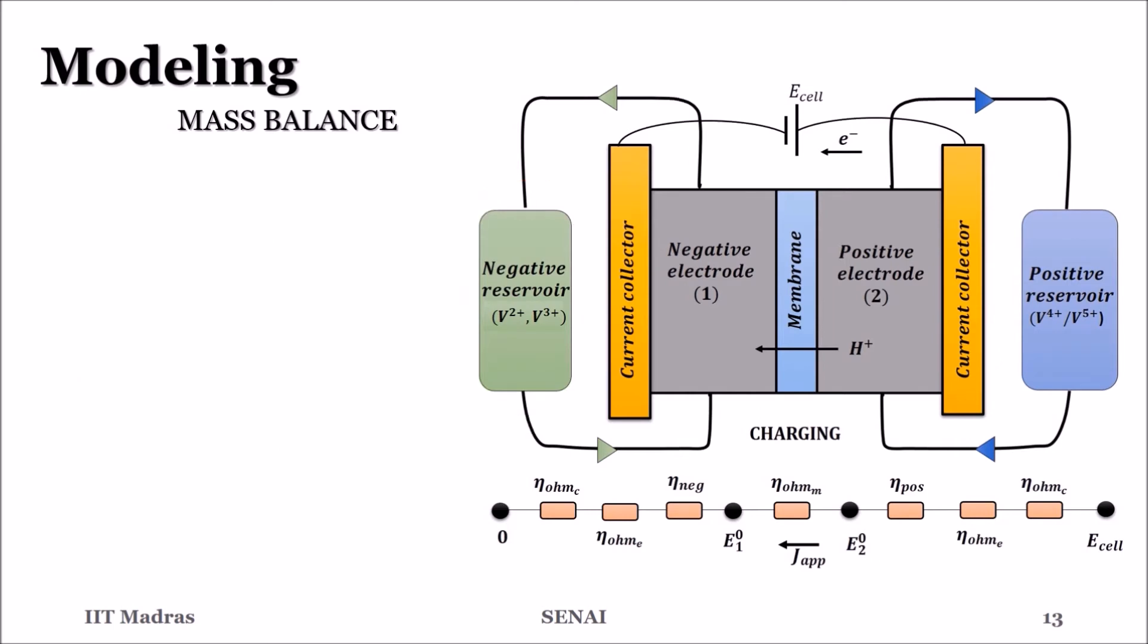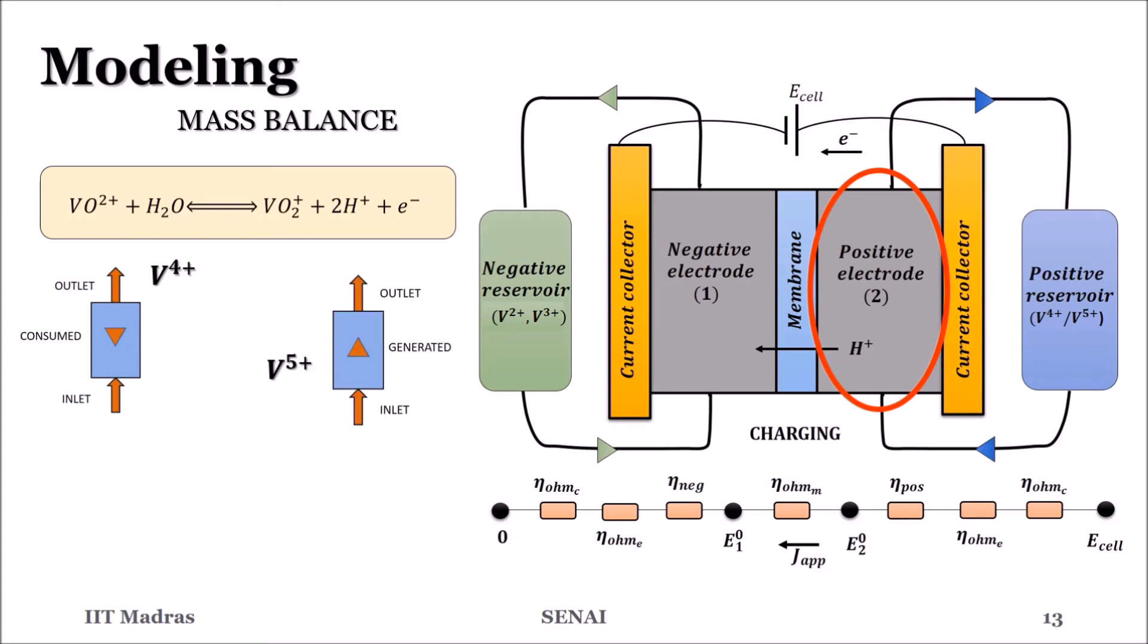During charging in the positive electrode, V4 is converted to V5. In addition to the convectional mixing of each component, V4 has a consumption term, V5 is generated, protons will have a generation term and an outflow through the membrane.